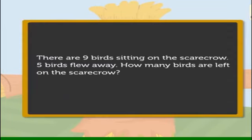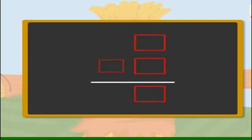How many are left means we have to subtract. Let us see what information we have and what we have to find out. Information: nine birds sitting on the scarecrow, five birds flew away. We have to find out how many birds are left on the scarecrow. How many are left means we have to subtract.